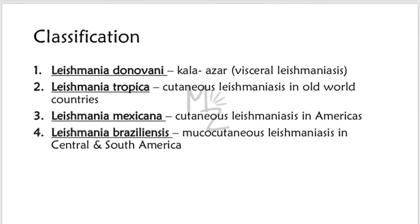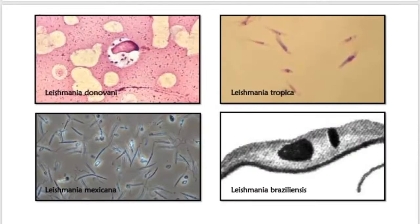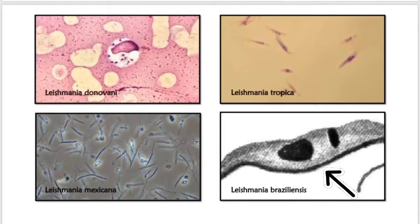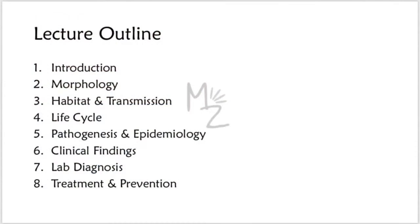Leishmania braziliensis is responsible for mucocutaneous Leishmaniasis in Central and South America. In this picture, you can see the amastigotes and promastigotes inside a macrophage — these are of Leishmania donovani. I will talk about amastigotes and promastigotes a bit later. Other pictures show Leishmania tropica, Leishmania braziliensis, and Leishmania mexicana.